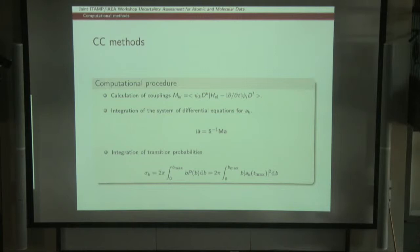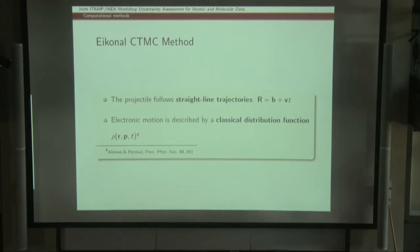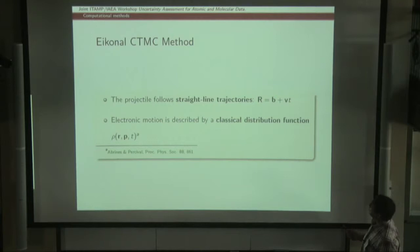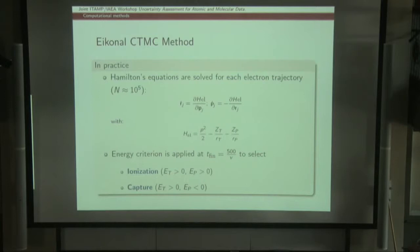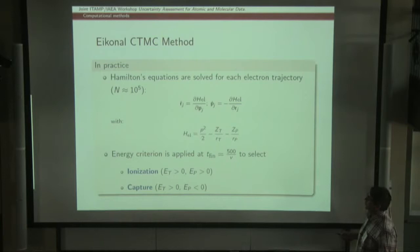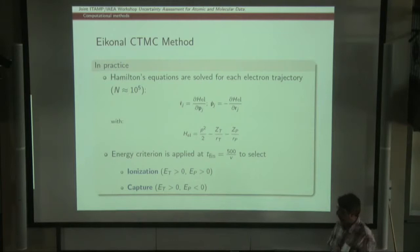So I am going to focus on the convergence of the different expansions. The second type of methods, generally used at higher energies, are those based on the Classical Trajectory Monte Carlo method. Again, I assume the nuclei follow rectilinear trajectories, and the electronic motion is described by a classical distribution function. In practice, this involves the solution of a set of Hamilton equations for the different electronic trajectories.